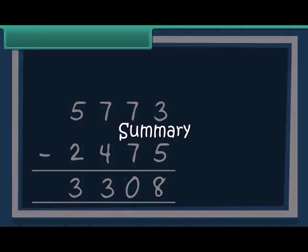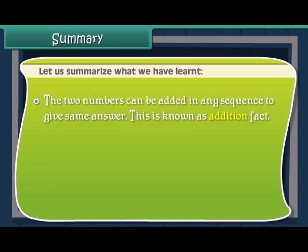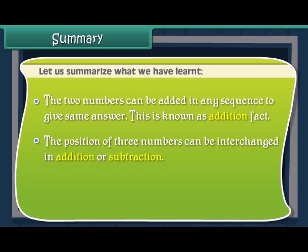Summary. Let us summarize what we have learned. The two numbers can be added in any sequence to give the same answer. This is known as addition fact. The position of three numbers can be interchanged in addition or subtraction.